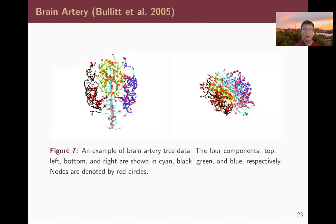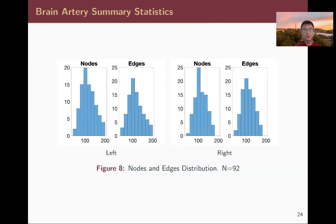For a real data application, we use human brain artery data with 92 subjects. We divide each brain artery into four components colored cyan, black, green, and blue, with circles denoting nodes — referred to as the top, left, bottom, and right components. Summary statistics for the left and right components show that on average the graphs have around 100 nodes, with a maximum around 200 and minimum around 50 — these are very complex and large graphs.